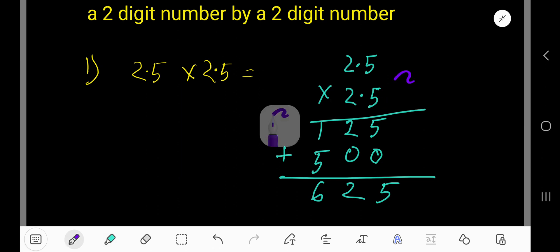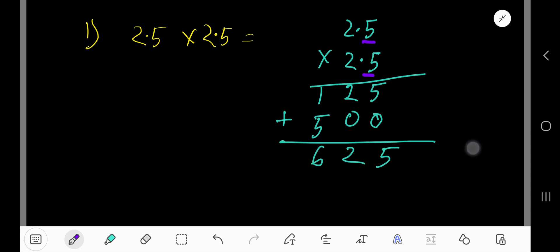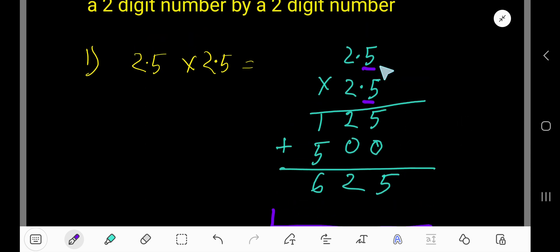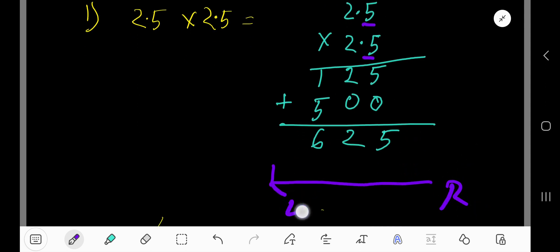Now we have to place our decimal. Look: after the decimal point in this number we have one digit, and here after the decimal we have one digit, so totally after the decimal we have two digits. Now in the product, you have to start from right to left. After the decimal we have two digits, so start from right to left: one, two. So the decimal point will come here.